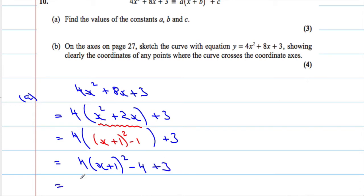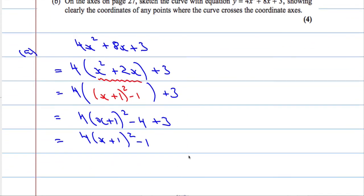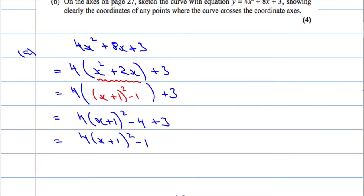Minus 4, and then we have that plus 3. So that gives us 4 times x plus 1 to be squared, negative 4 plus that 3, minus 1. So we can say that a equals 4, b equals 1, and c equals negative 1.